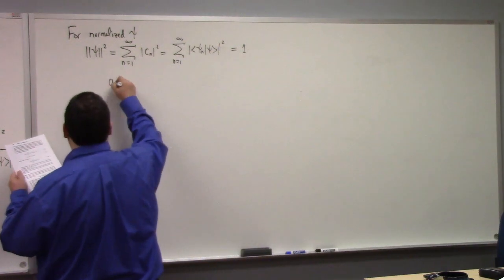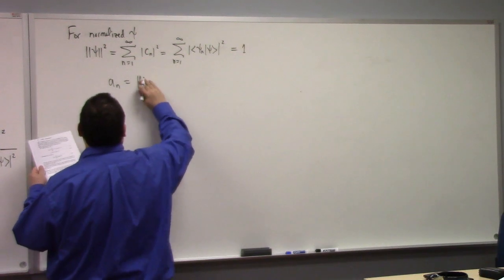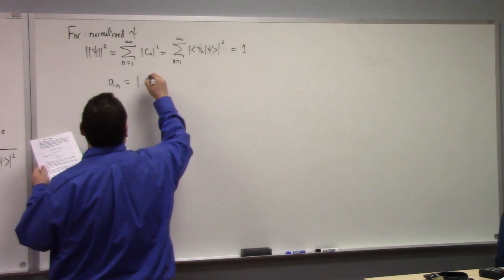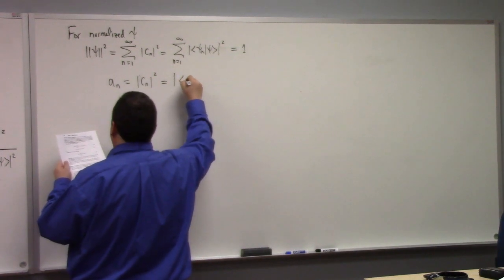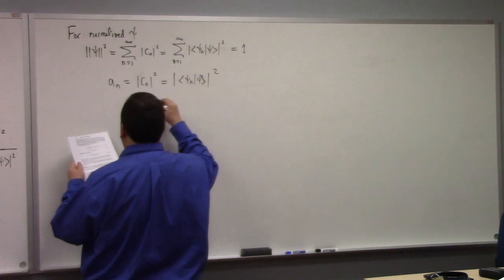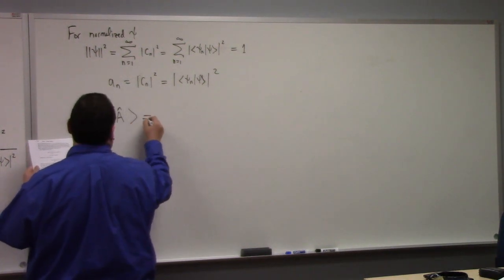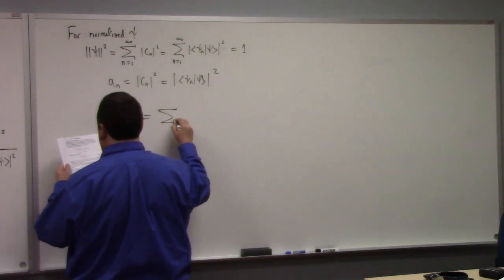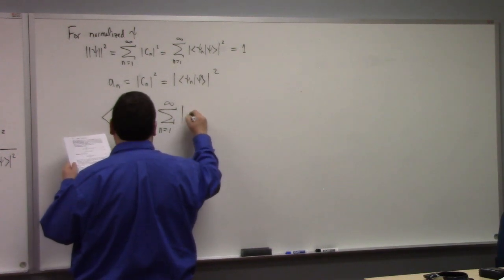So in this context, a_n is just the module, a_n literally is the modulus of C_n squared, which is psi_n with psi squared, and then finally the expectation value will be equal to the sum. And this is the thing you'll recognize from quantum mechanics, I think, Jacob.